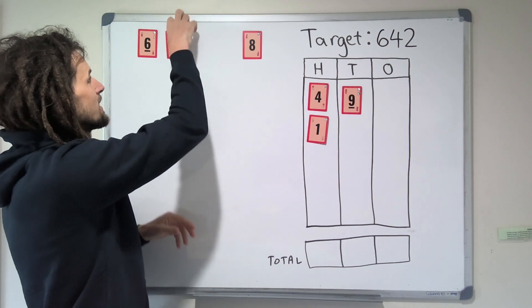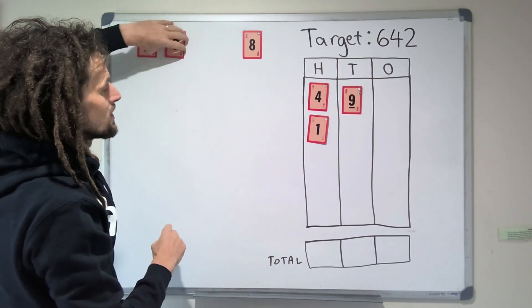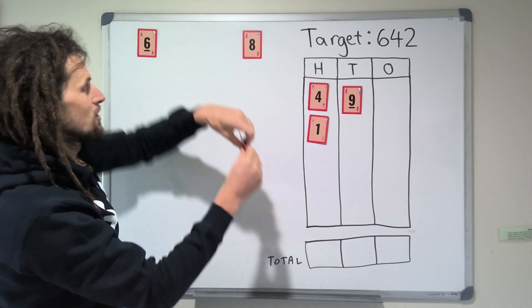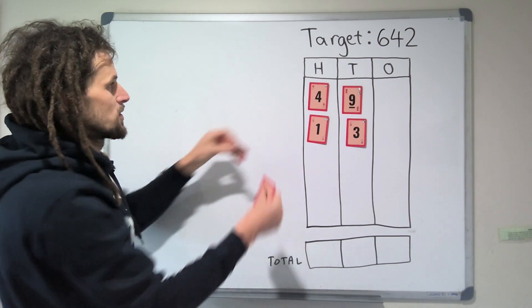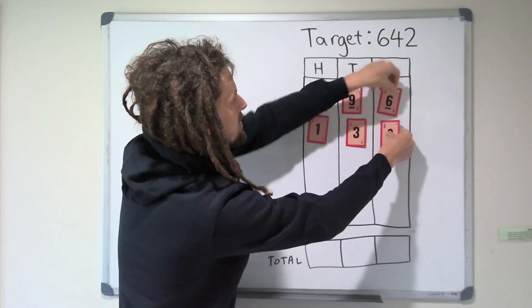So if I put the 3 here with the 9, that'll be another 120. And if I put the 6 and the 8 together, there's 14.